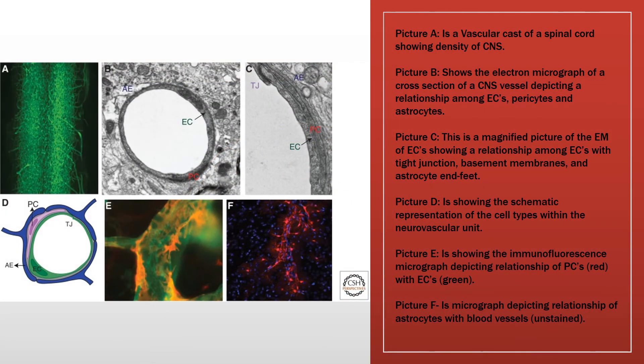On this next slide, I have pictures that show the cells. Picture A is a vascular cast of a spinal cord showing the density of CNS vasculature. Picture B shows an electron micrograph cross-section of a CNS vessel depicting the relationship among endothelial cells, pericytes, and astrocytes.